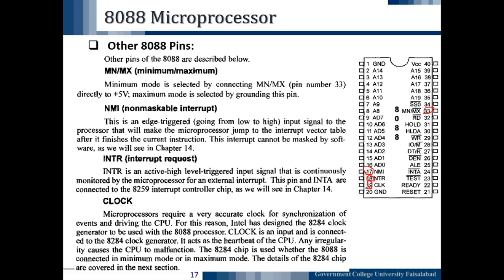The next pin is the Clock pin CLK, pin number 19. The microprocessor requires a very accurate clock for synchronization of events and driving the CPU. For this reason, Intel designed the 8284 clock generator to be used with the 8088 microprocessor. The CLK is an input connected to the 8284 clock generator IC — it acts as the heartbeat of the CPU and any irregularity causes the CPU to malfunction. The 8284 chip is used whether the 8088 is in minimum or maximum mode; details of the 8284 chip are covered in the next section.